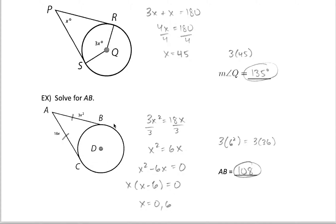Let's plug it back in so that we can find the length of AB. So plug it back into this expression here. So let's square 6 first, and then multiply by 3, and we get our length of 108.